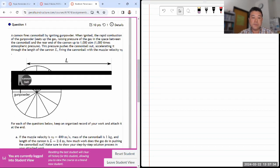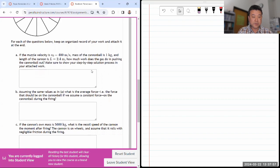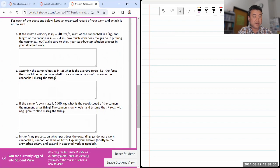Oh, surprise, it's the cannon mechanics question. For the edited video, I started editing after I loaded the dice. A cannon fires the cannonball by igniting gunpowder. These details are actually not relevant. Even thousand atmosphere, not relevant. Pressure pushes the cannonball out, accelerating through the length. Length might be relevant. Let's see what questions they ask. For each of the questions, keep an organized record of your work and attach it.